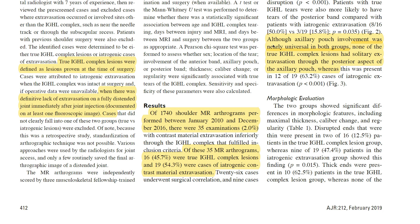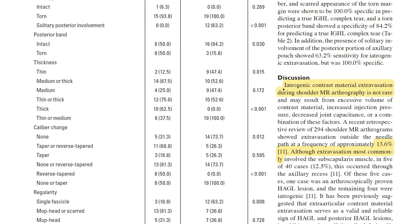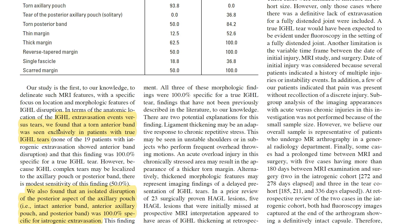One of the key results is that in nearly all true lesion cases there was contrast extravasation through the axillary pouch. None of the true lesions had solitary extravasation through only the posterior aspect of the axillary pouch — meaning the anterior band, posterior band, and anterior axillary pouch were intact. It's also important to realize that iatrogenic contrast material extravasation on shoulder MR arthrography is not rare — be mindful of it and keep it in your differential before writing HAGL in your report.